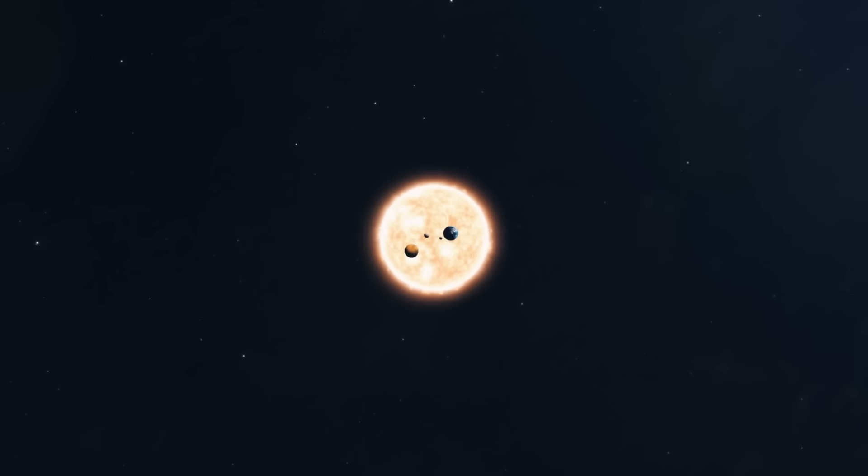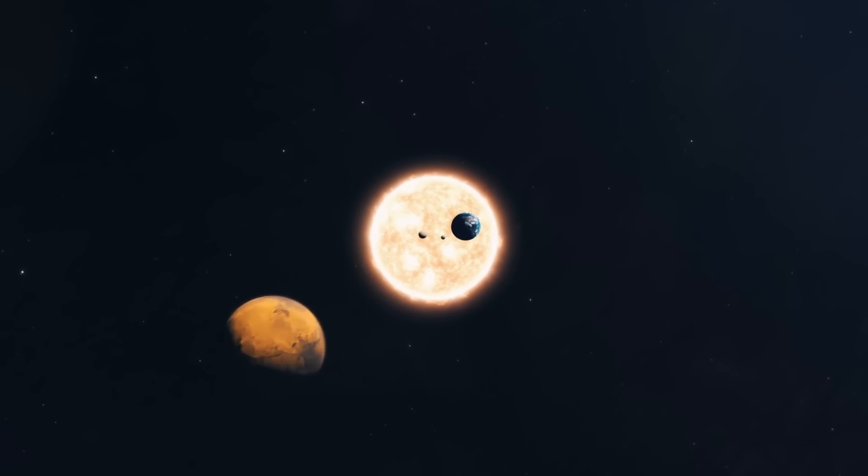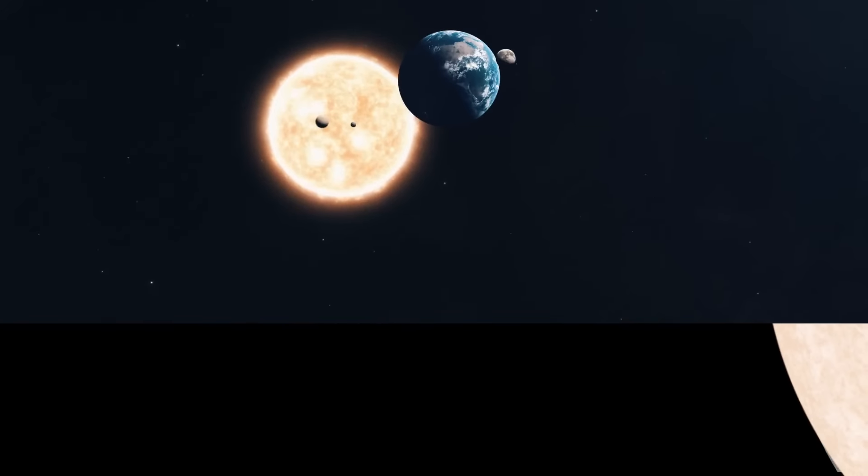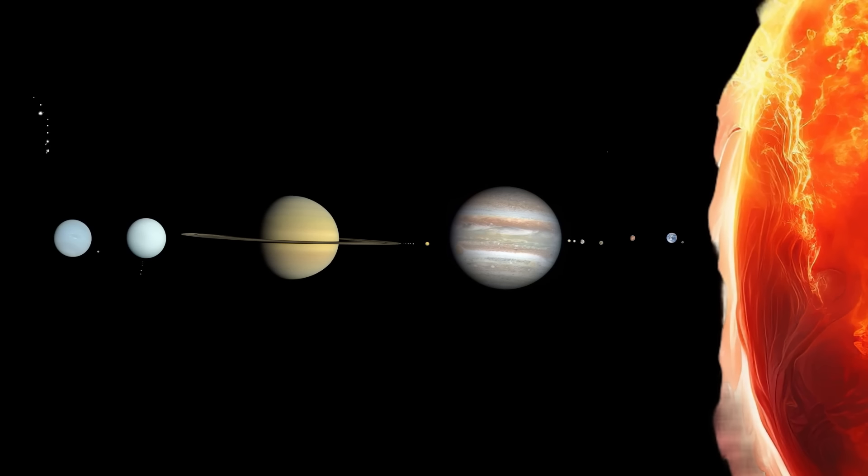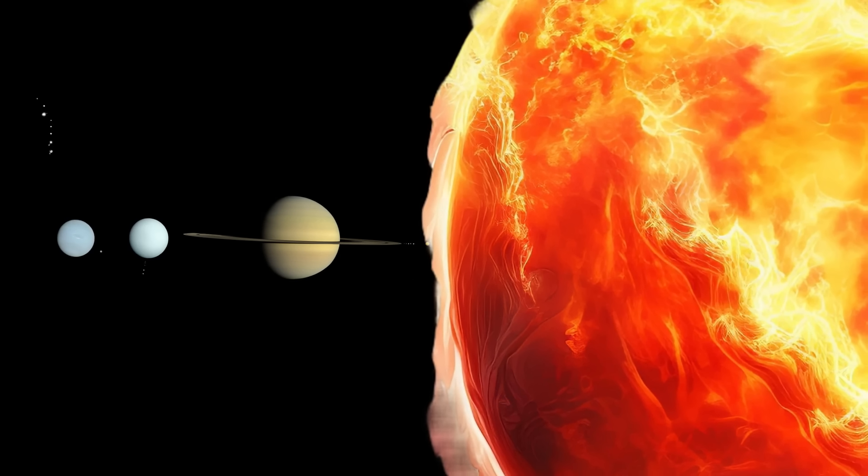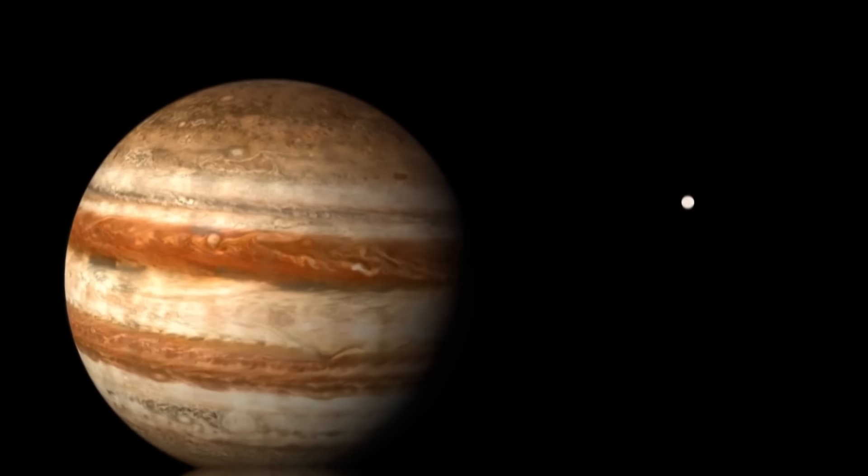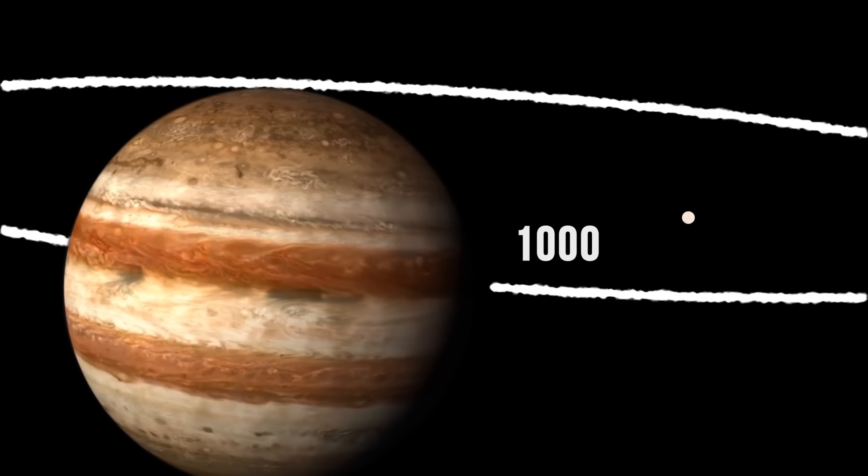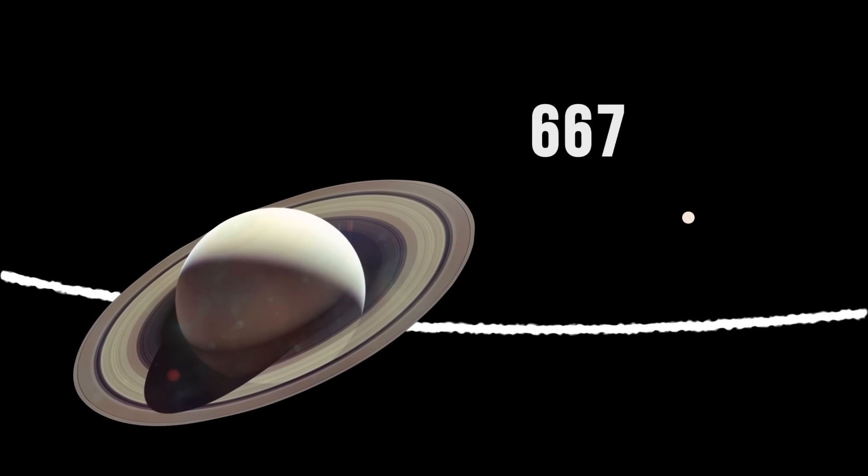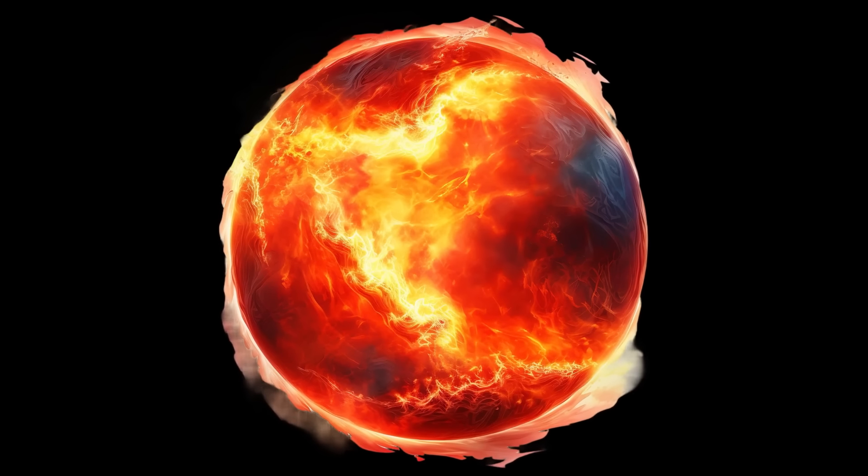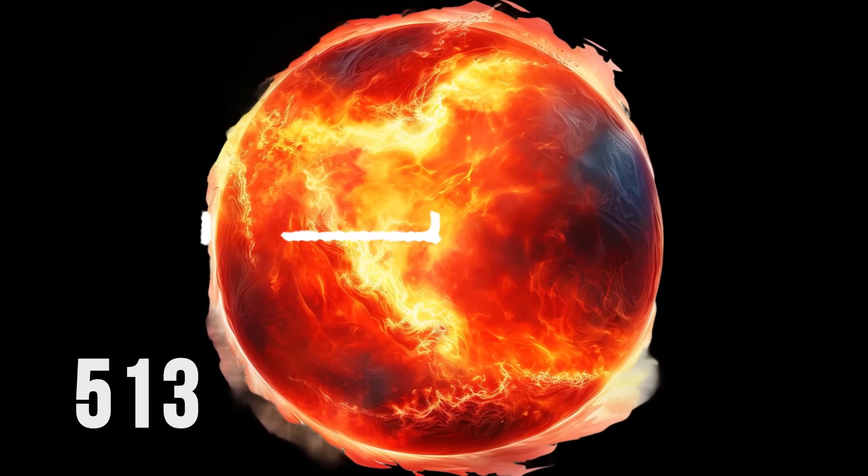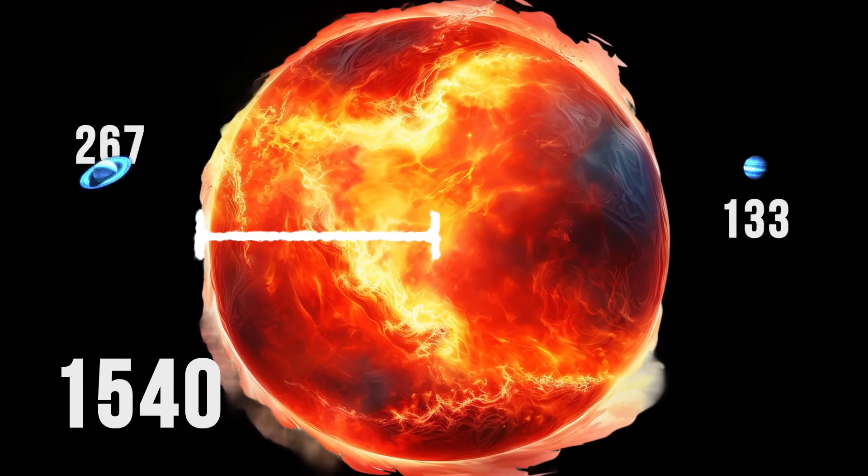If we placed WOH G64 at the center of the solar system, the surface of this star would extend past the orbit of Jupiter, swallowing up Mercury, Venus, Earth, Mars and Jupiter itself. You see, the average radius of Jupiter's orbit is around 1000 times the radius of the Sun. As for Saturn, the radius of its orbit is around 2000 times the radius of the Sun. That's why WOH G64, with its average radius being 1500 times the radius of the Sun, fits right in between.